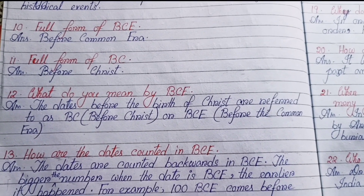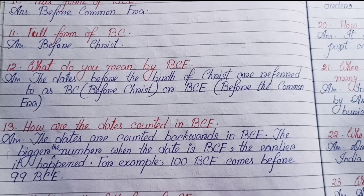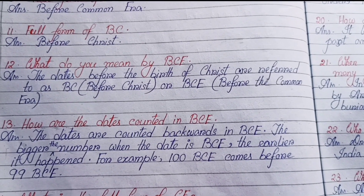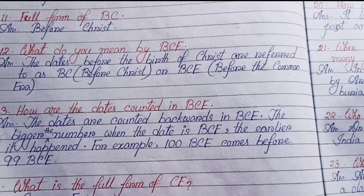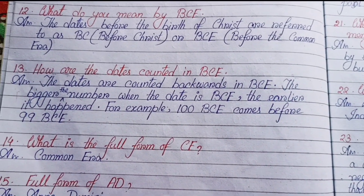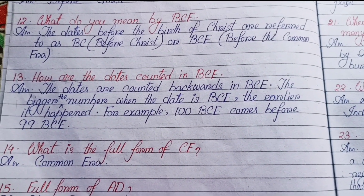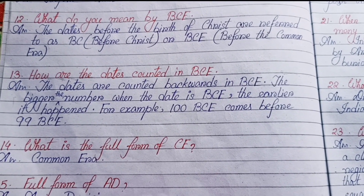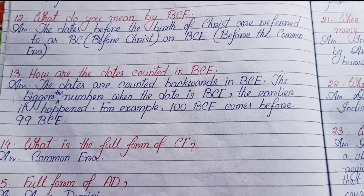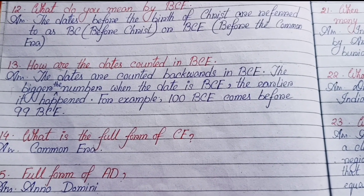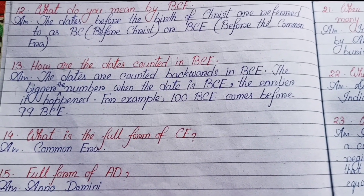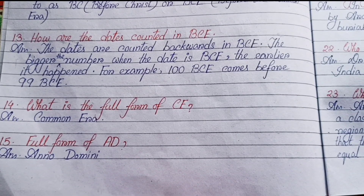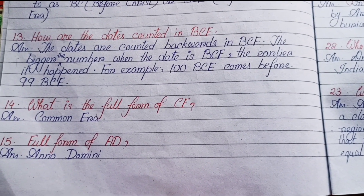Number ten: Full form of BC — Before Christ. Number twelve: What do you mean by BCE? The dates before the birth of Christ are referred to as BC, that means Before Christ, or BCE, Before the Common Era. Number thirteen: How are the dates counted in BCE? The dates are counted backwards in BCE. The bigger the number when the date is BCE, the earlier it happened. For example, 100 BCE comes before 99 BCE.